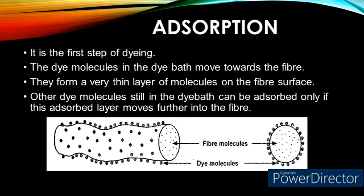The other dye molecules which are still in the dye bath can be adsorbed only if this adsorbed layer moves further into the fiber. A schematic representation is provided here as an example for explaining the adsorption of dye molecules on the surface of the fiber.